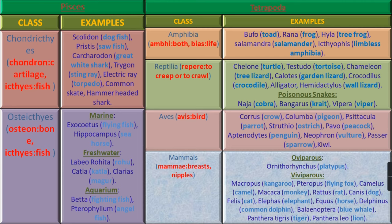Class Mammals — where Mammae means Breasts or Nipples, that is the animals have breasts or nipples. Examples are oviparous animals like Ornithorhynchus (Platypus), and viviparous animals like Macropus (Kangaroo), Pteropus (Flying Fox), Camelus (Camel), Macaca (Monkey), Rattus (Rat), Canis (Dog), Felis (Cat), Elephas (Elephant), Equus (Horse), Delphinus (Common Dolphin), Balaenoptera (Blue Whale), and Panthera leo (Lion).